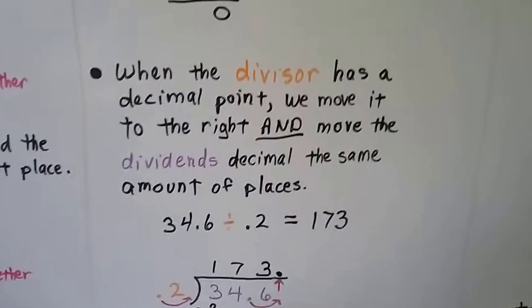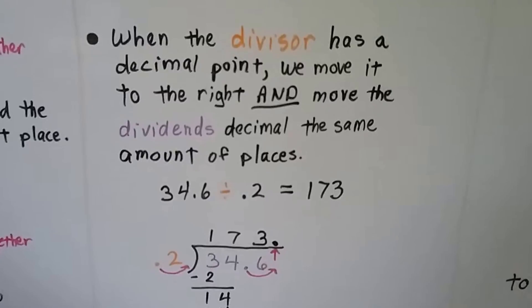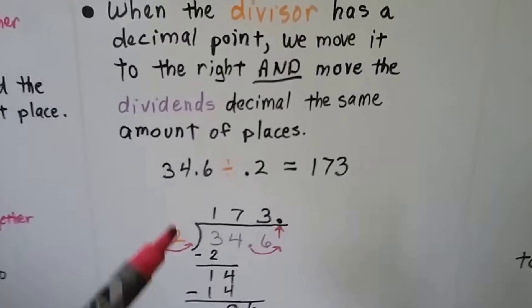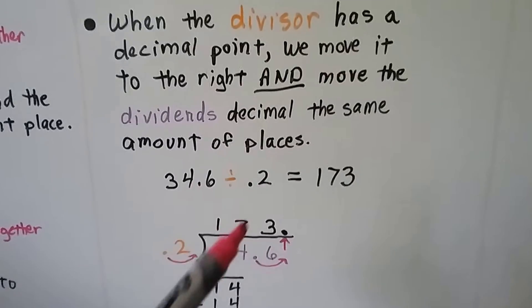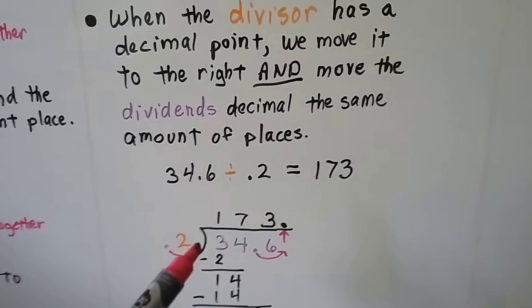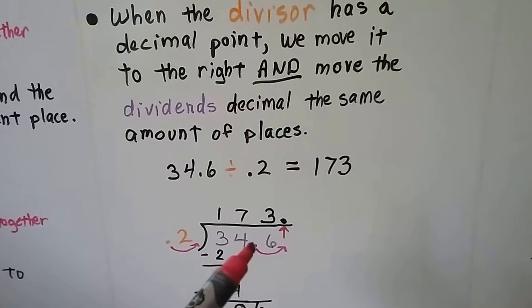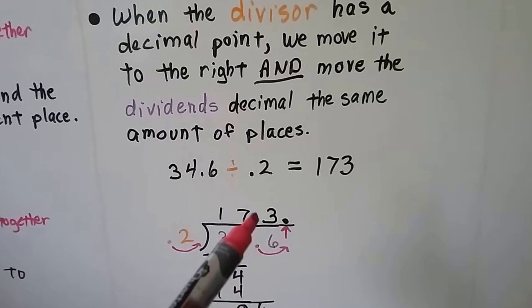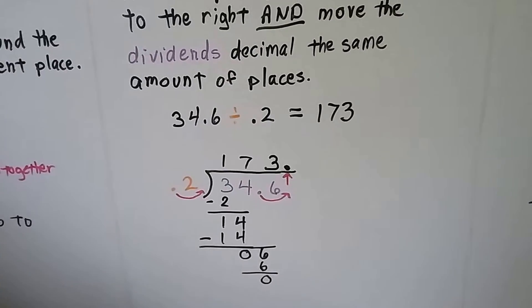When the divisor — the number on the outside — has a decimal point, we move it to the right to make it a whole number, and move the dividend's decimal the same number of places. So if both of these have a decimal, we move the decimal point from the divisor back so that it's a whole number, but however many hops we move it back, that's how many we have to move it back in the dividend.